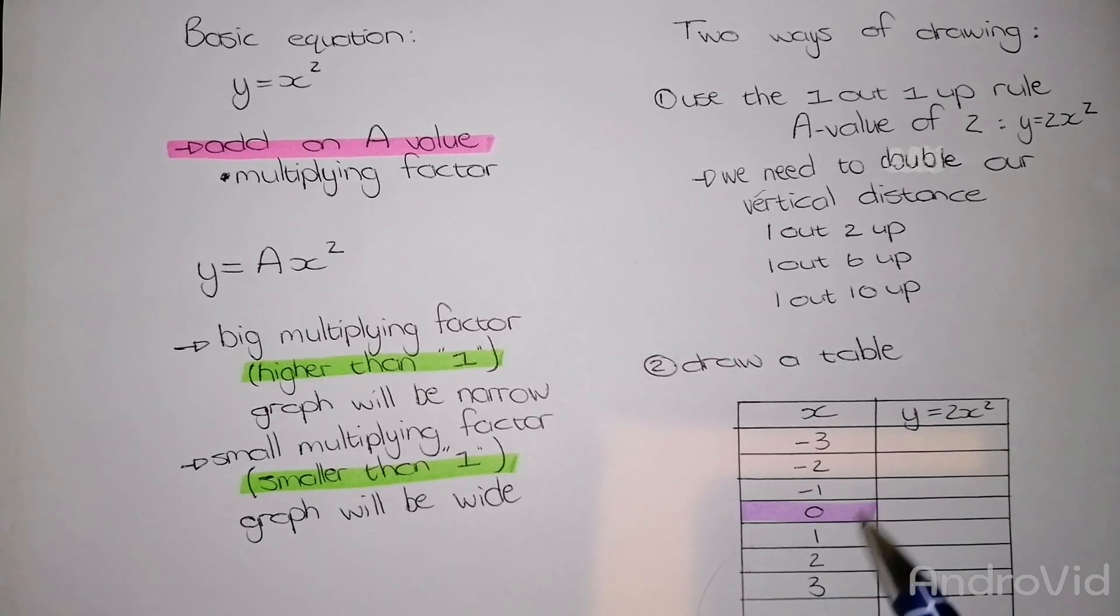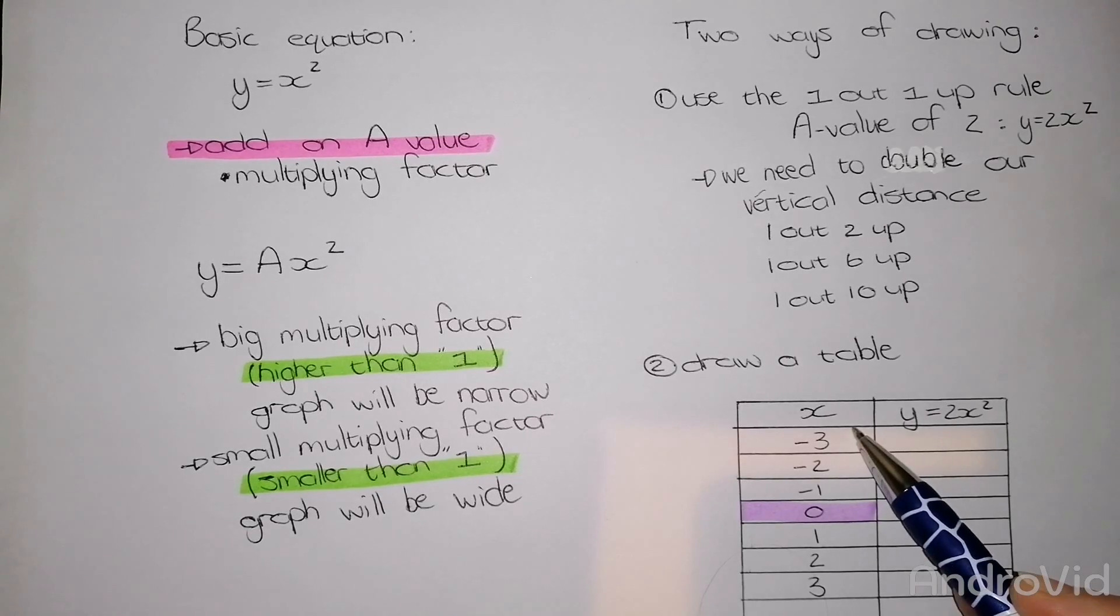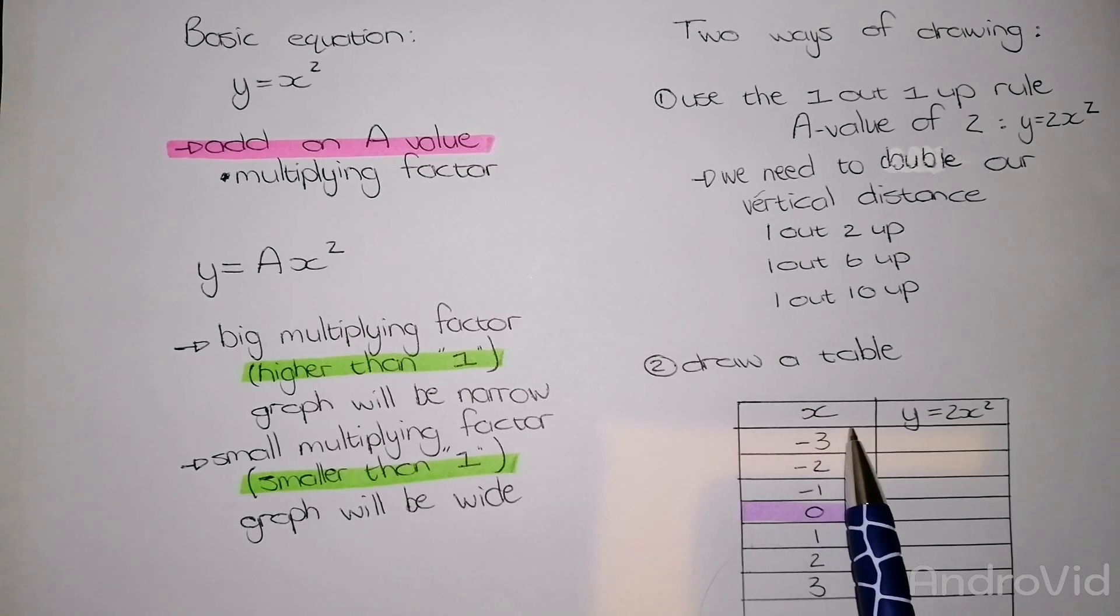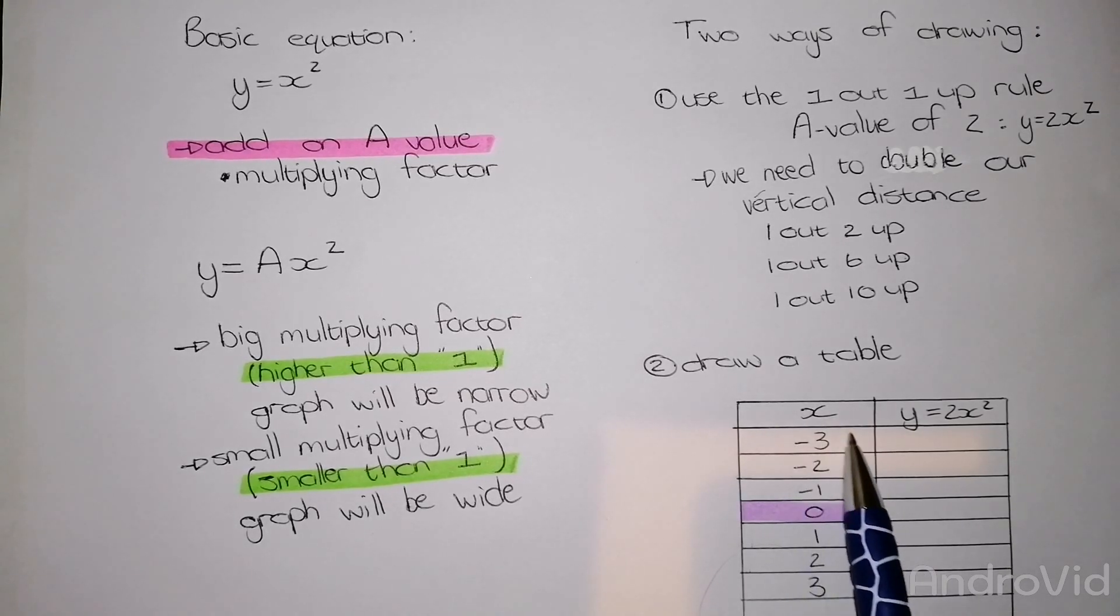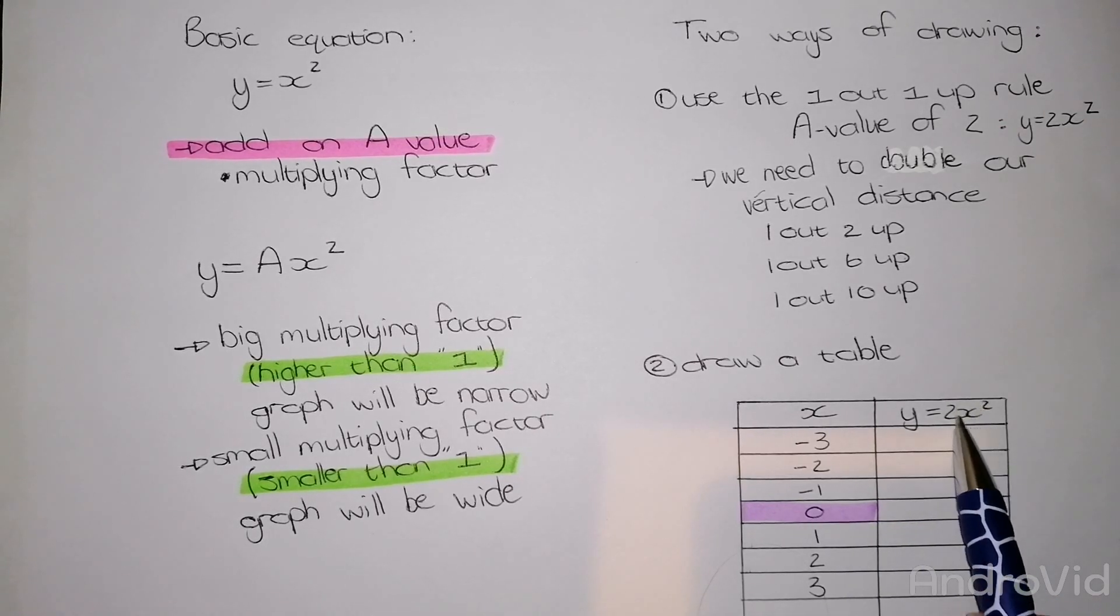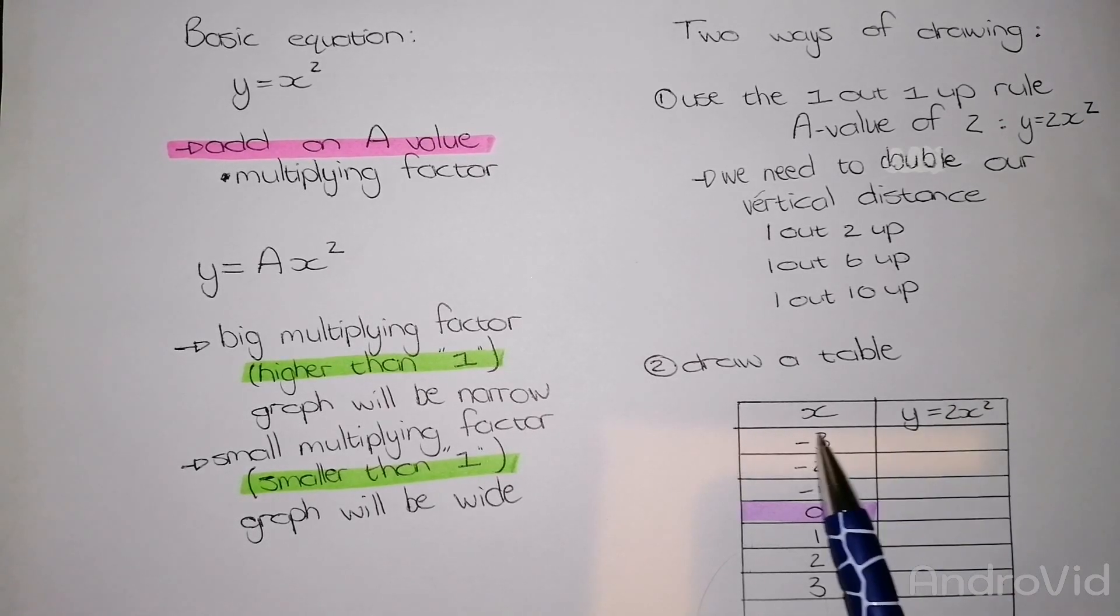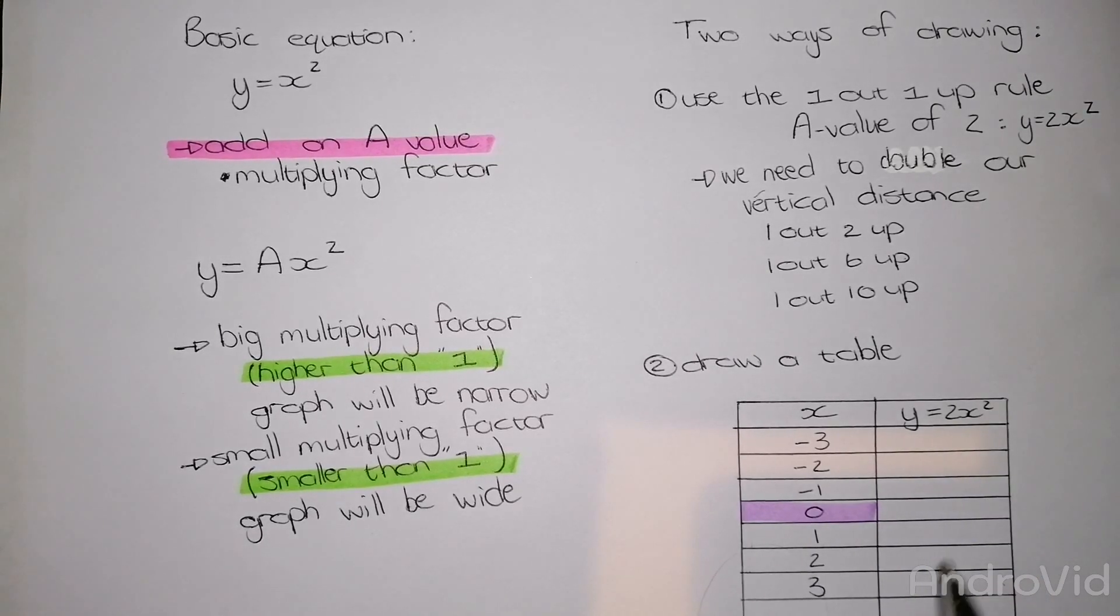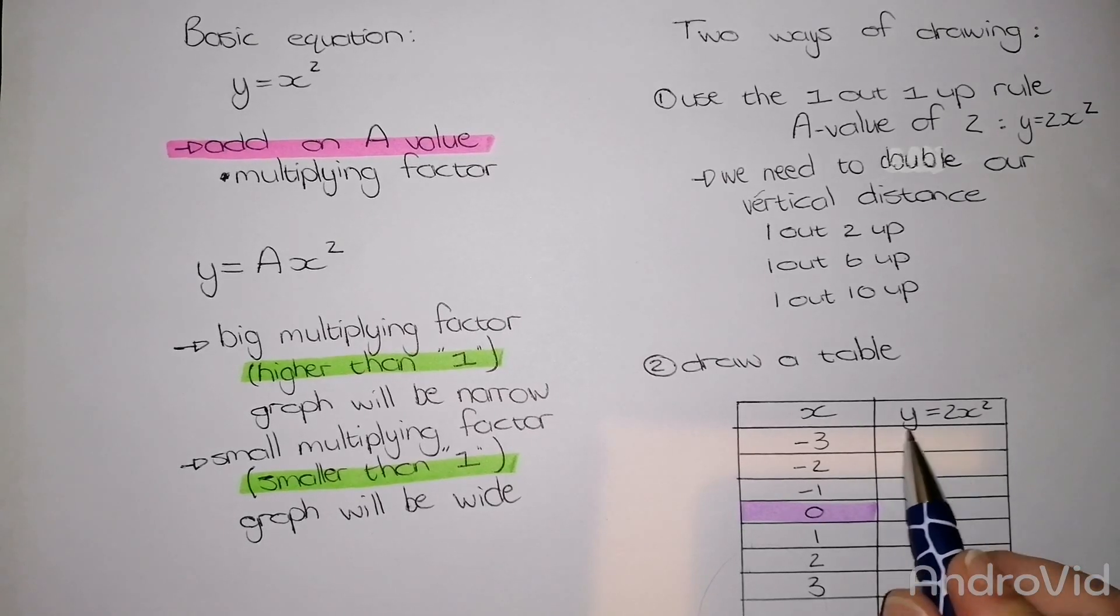I choose three x values next to my vertex on both sides. The next thing I need to do is I need to substitute my new x value of negative 3 into my new equation into x's place. For instance, my first line will read 2 multiplied by negative 3 squared. That will then give me my y value.